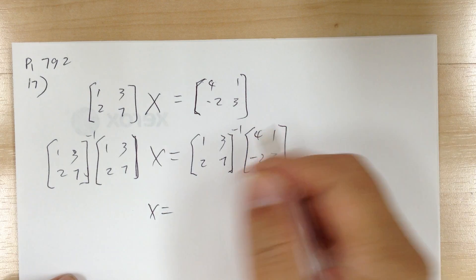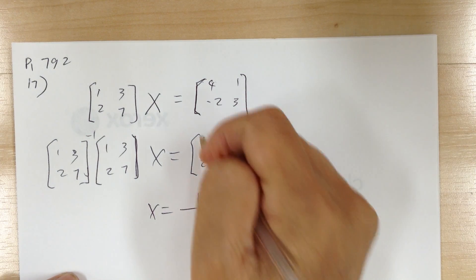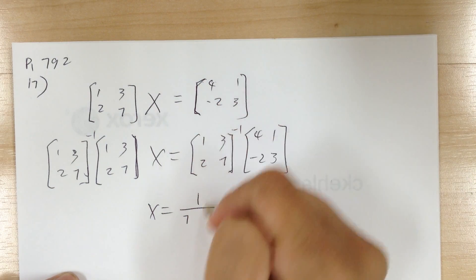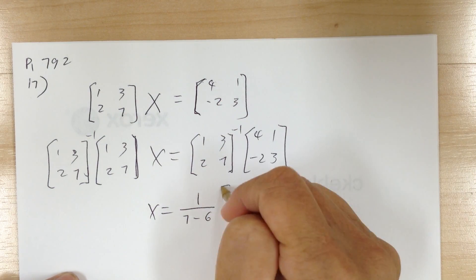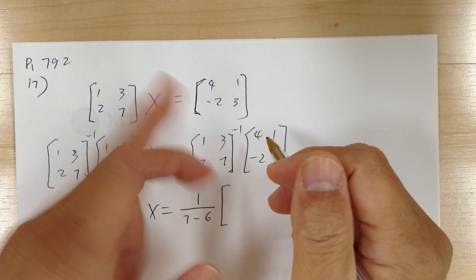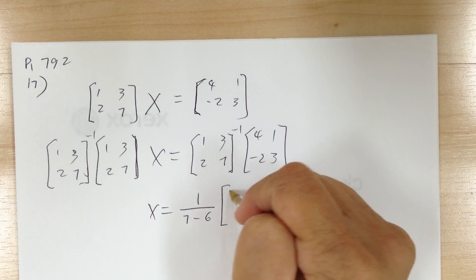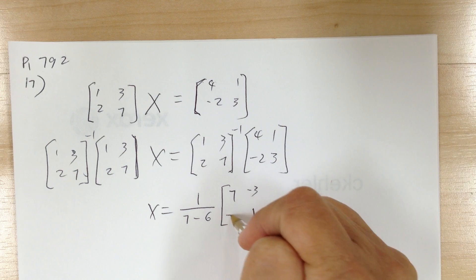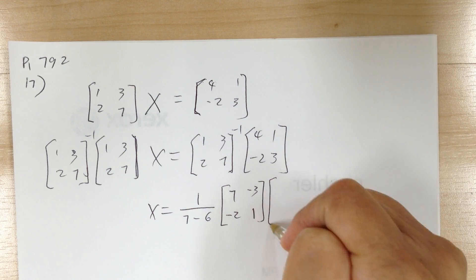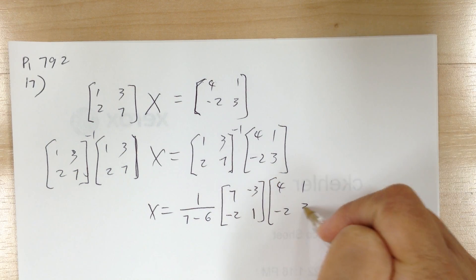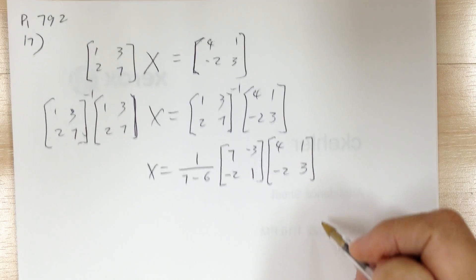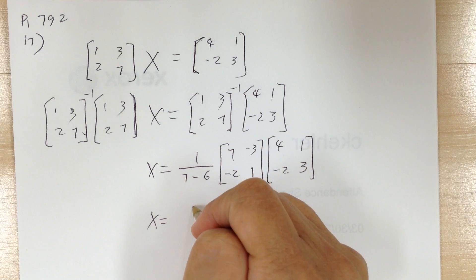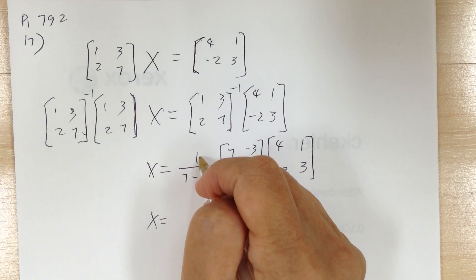The inverse will be 1 over the determinant. The determinant is 7 minus 6, which gives 1. You have to switch the diagonal elements and put a negative on the other diagonal. Don't multiply first — since the determinant is just 1, that's kind of nice.